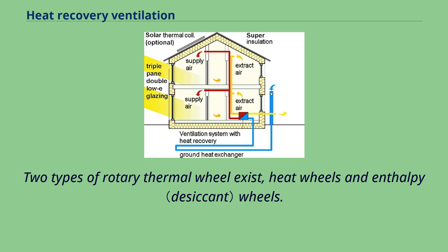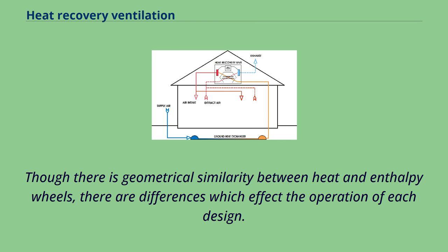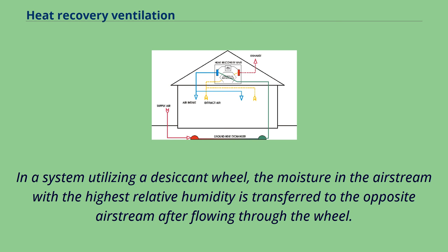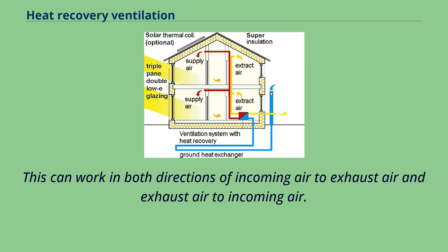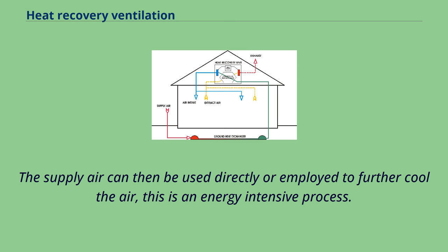Two types of rotary thermal wheel exist: heat wheels and enthalpy wheels. Though there is geometrical similarity between heat and enthalpy wheels, there are differences which affect the operation of each design. In a system utilizing a desiccant wheel, the moisture in the air stream with the highest relative humidity is transferred to the opposite air stream after flowing through the wheel. This can work in both directions — incoming air to exhaust air and exhaust air to incoming air. The supply air can then be used directly or employed to further cool the air, though this is an energy intensive process.